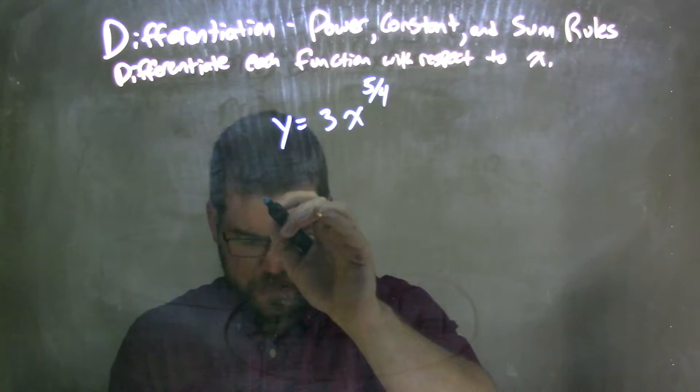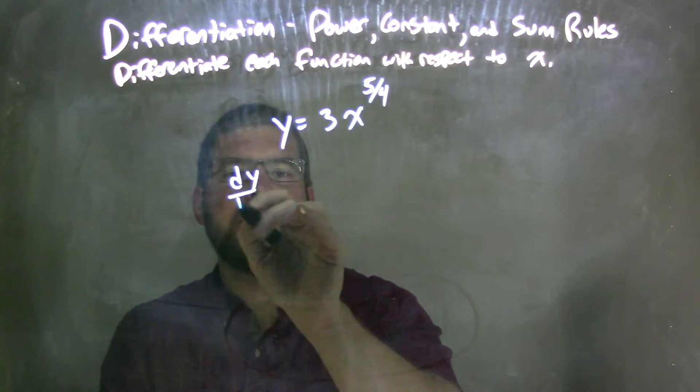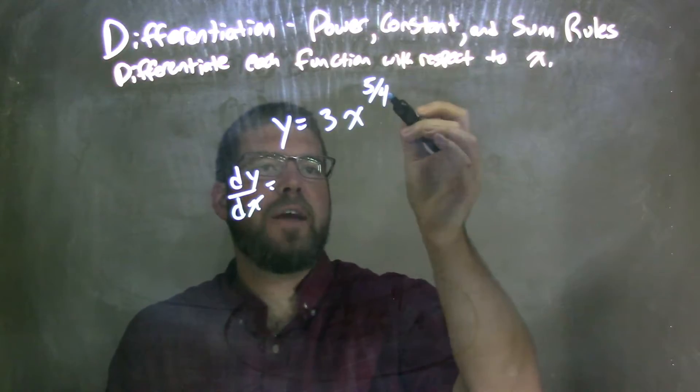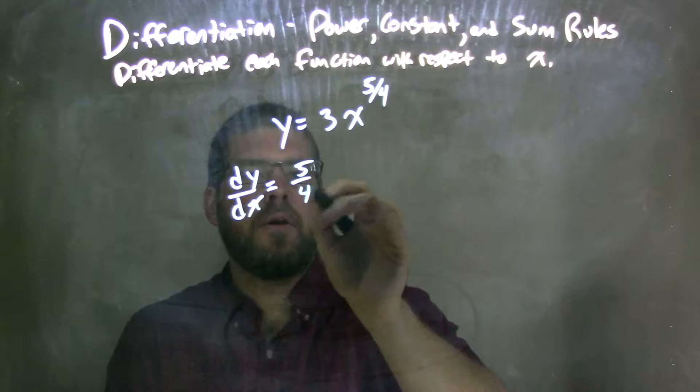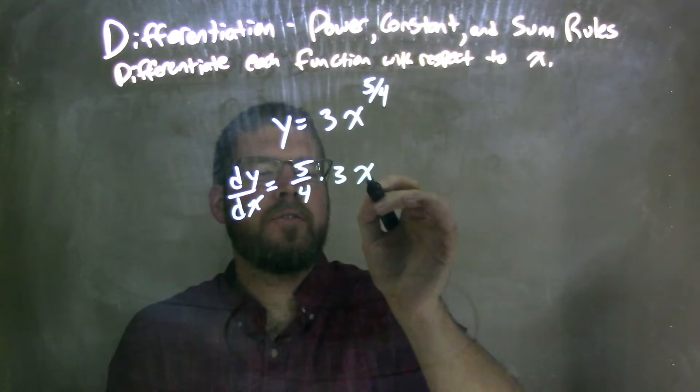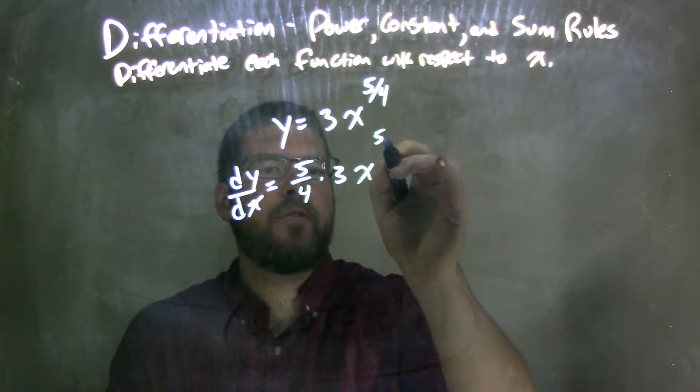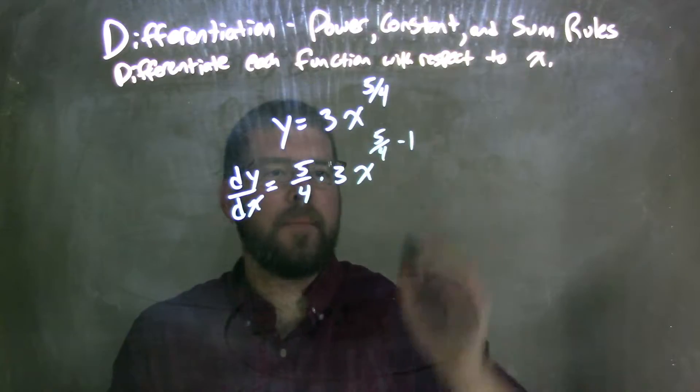Power rule states when I take my derivative, my dy/dx, power rule states I bring down the power, so 5/4, multiply by what's given, 3x to the power of 5/4 minus 1.